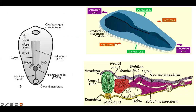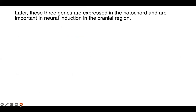In this picture, this particular structure is the notochord, and this is the somatic mesoderm. Later, these three genes — Chordin, Noggin, and Follistatin — are expressed in the notochord and are important in neural induction in the cranial region.